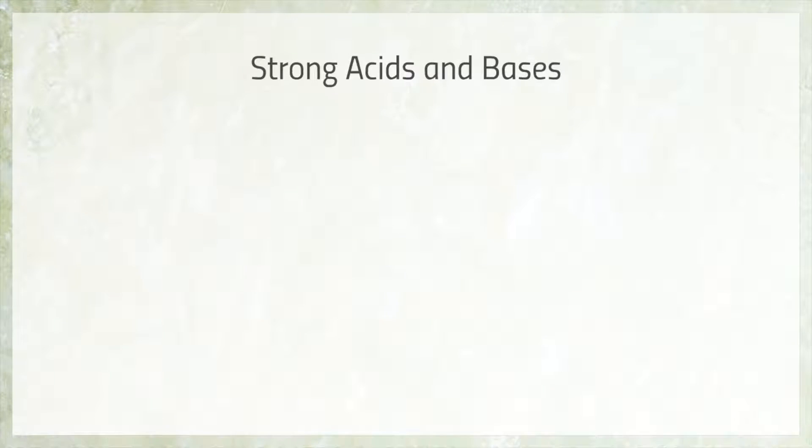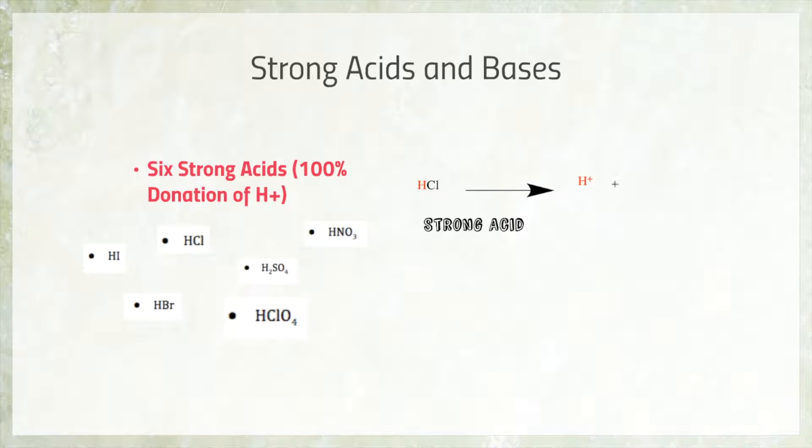In order to understand how we use acids and bases in the kitchen, it's important to be able to distinguish between two categories of acids: strong acids, which we would not want to use in the kitchen, and weak acids. There are six strong acids that you should memorize listed here. All of these strong acids will dissociate 100% in water, meaning they will donate all of their protons. All other acids besides these six can be treated as weak acids.